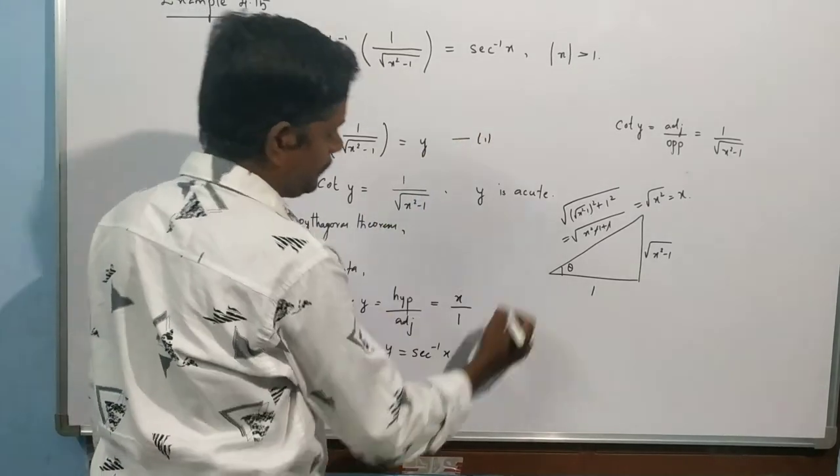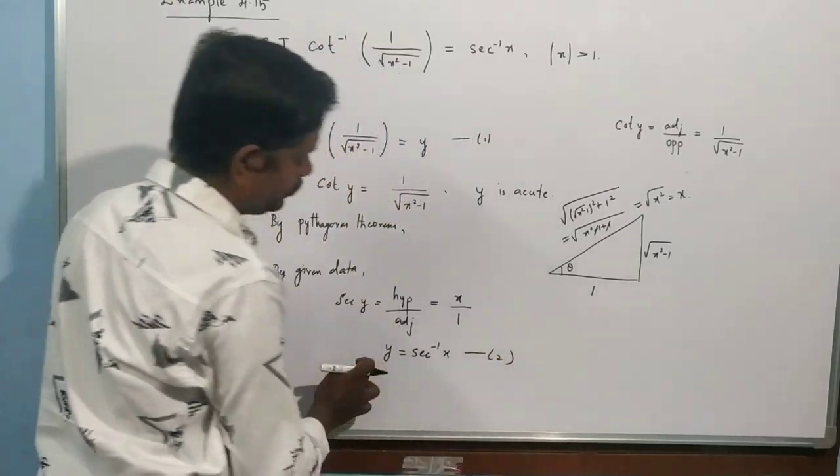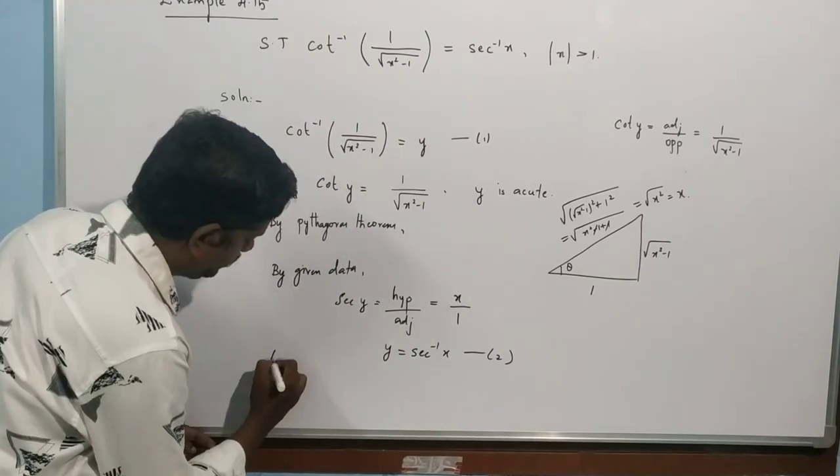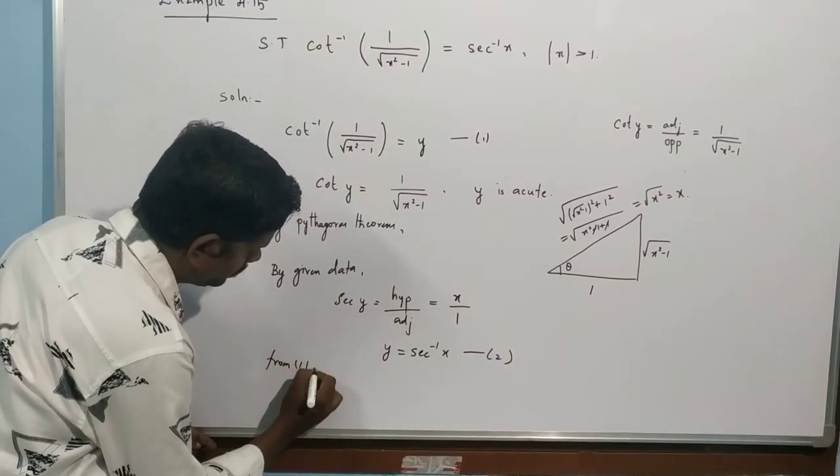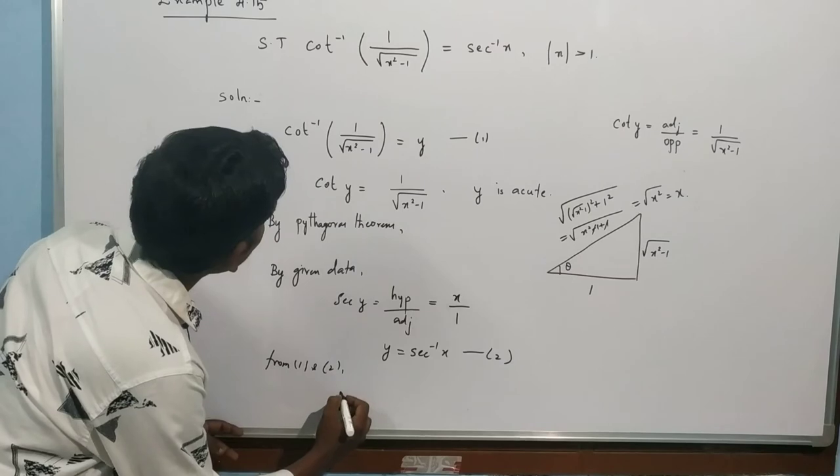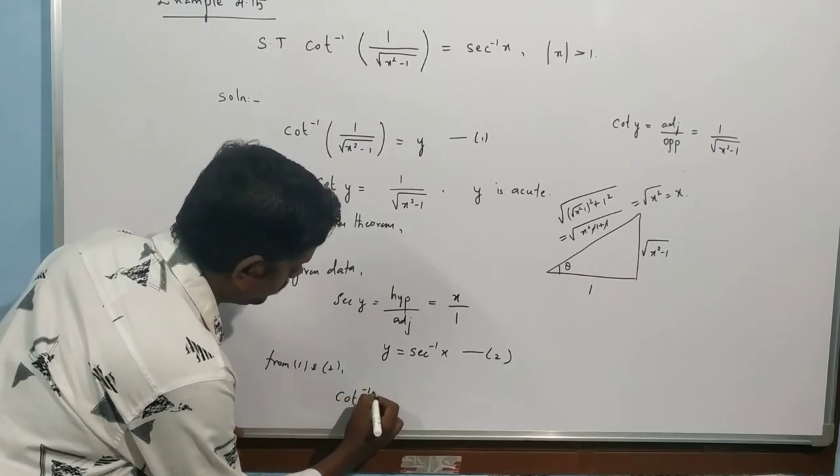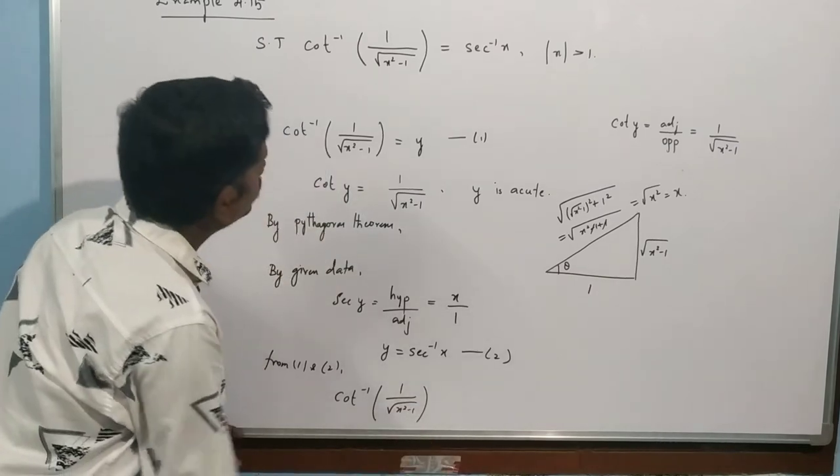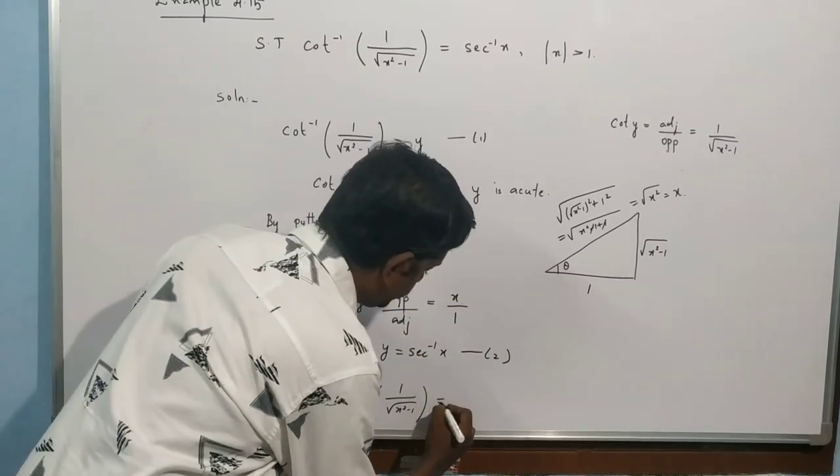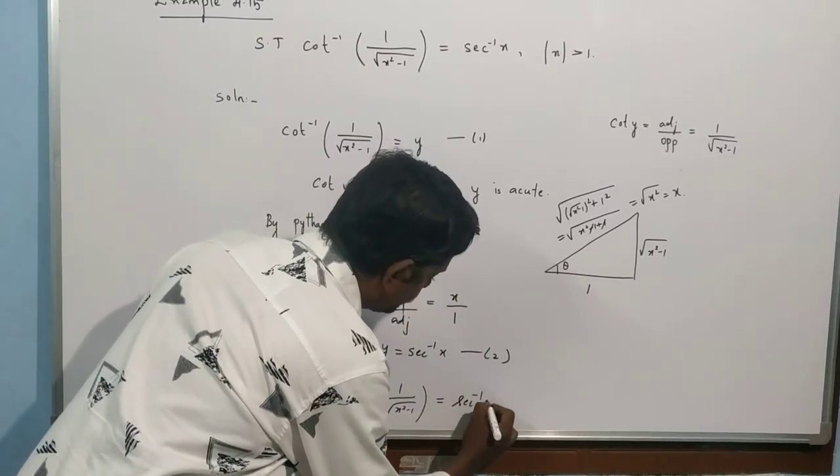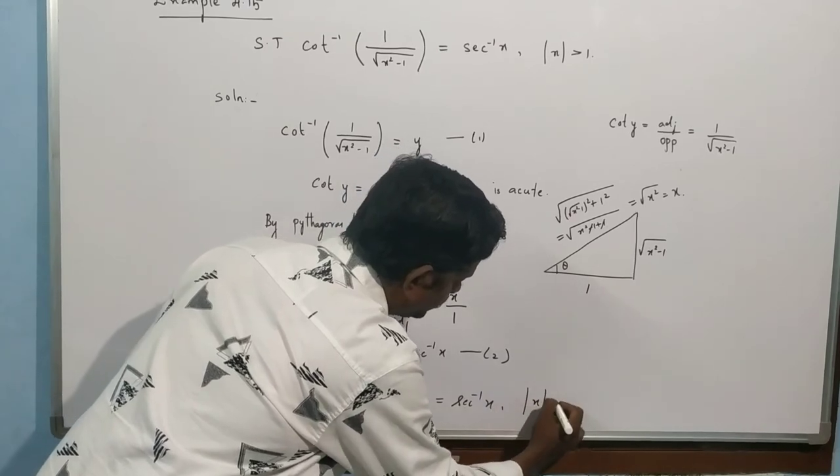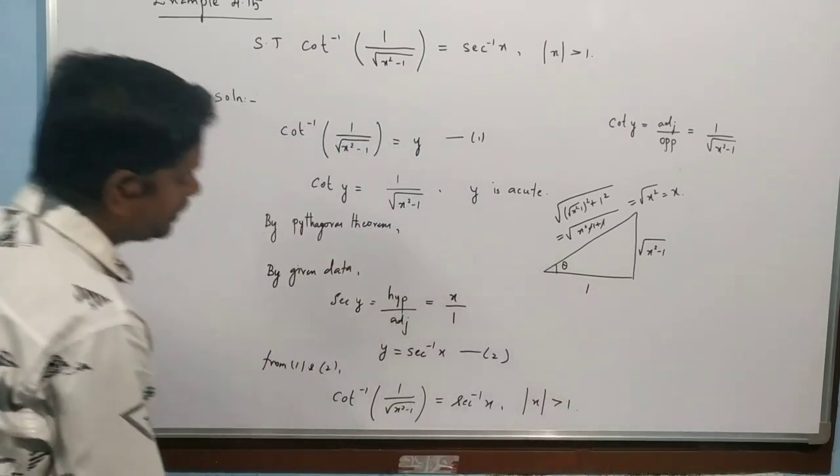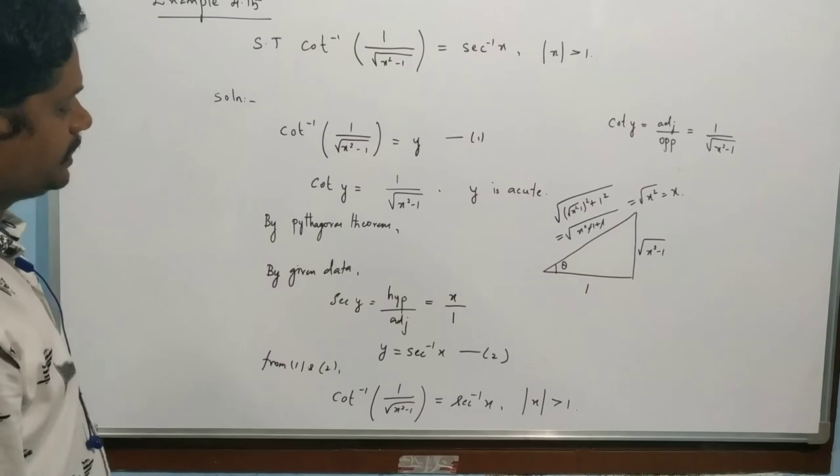So this is equation 1, this is equation 2, this is y, this is sec inverse of x. So from 1 and 2, cot inverse of 1 by root of x square minus 1, this is equal to y, equal to sec inverse of x. So x is greater than 1.